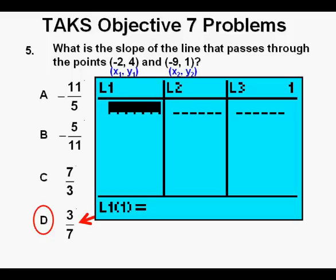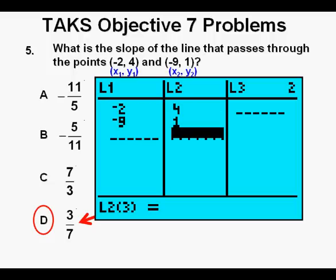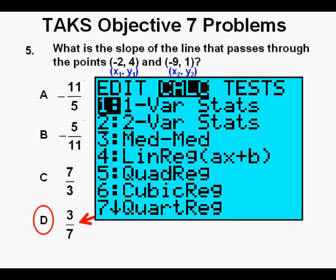Alternatively, we go to where we can plot points by pressing STAT, then ENTER. Then we place our points in place, the x values under L1 and the y values under L2. Now since we're finding the slope of a line, we find the equation of that line by pressing STAT, arrow once to the right to the calc submenu.